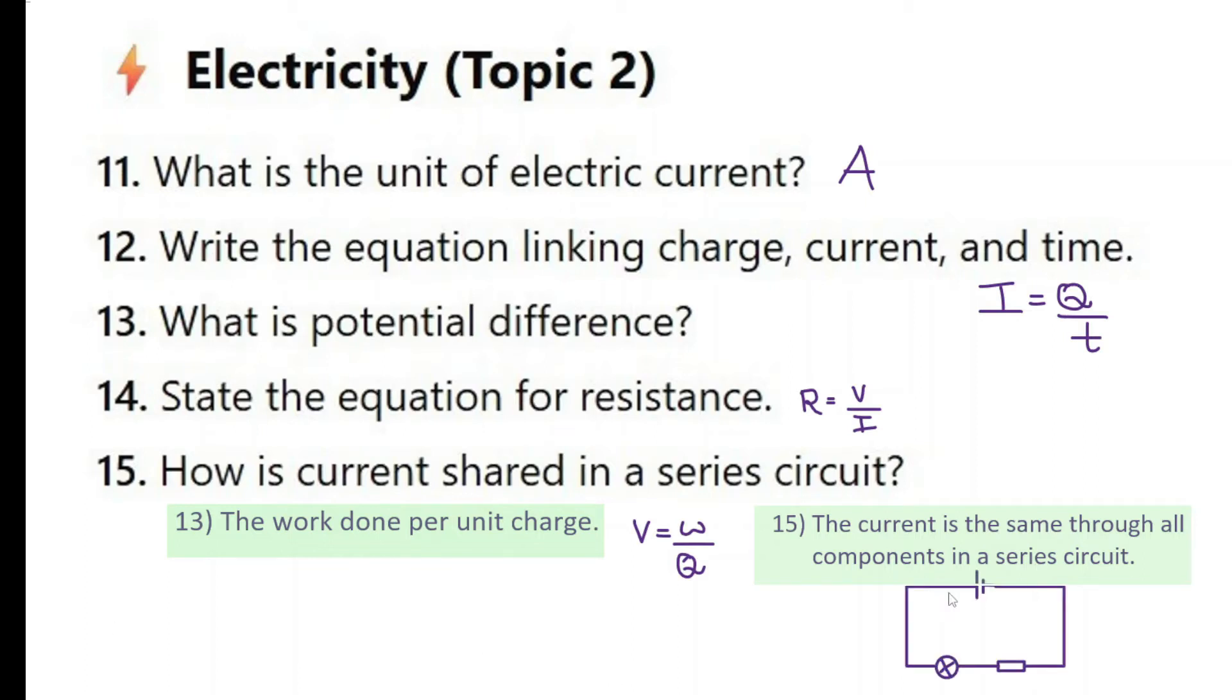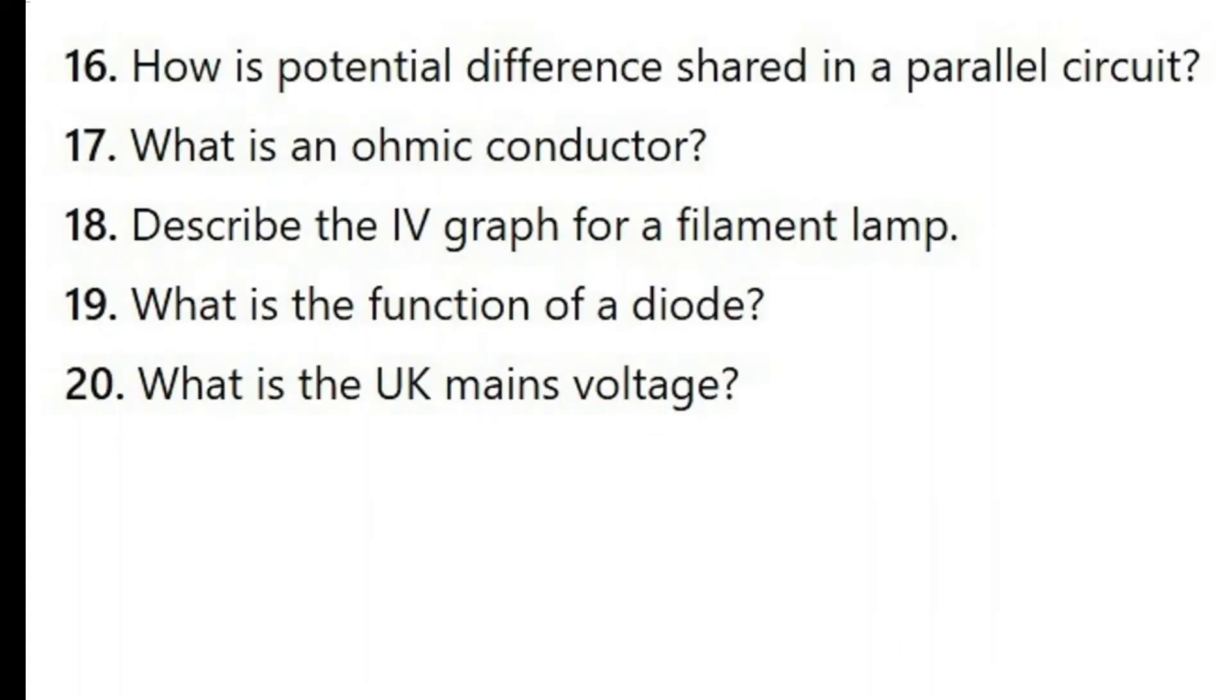How is current shared in a series circuit? The current is the same through all components in a series circuit. So if you think about a simple circuit like this series circuit, now let's say the current here is three amps. That three amps will go through the bulb, go through the resistor, still three, and comes back at the end. So it is the same everywhere.